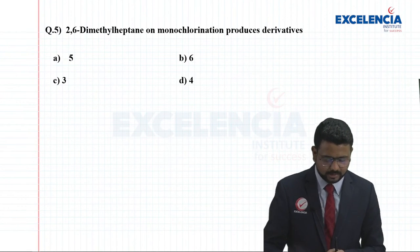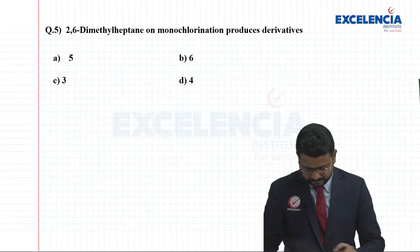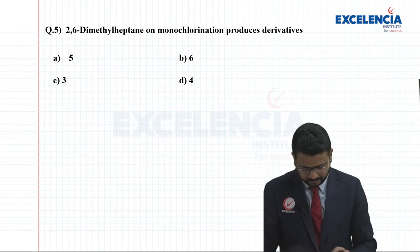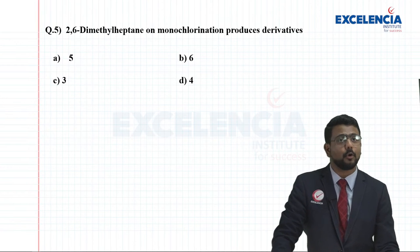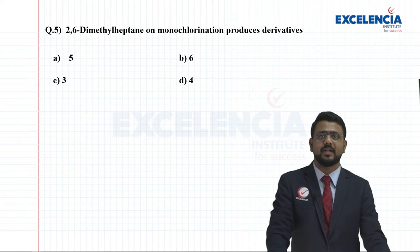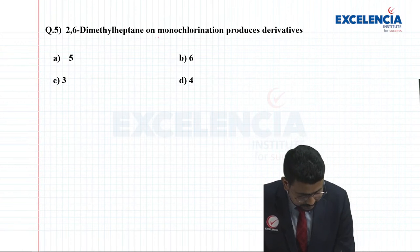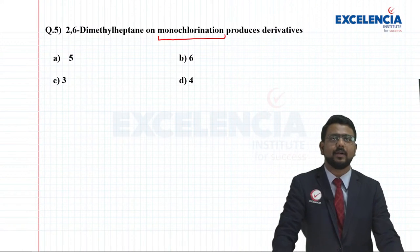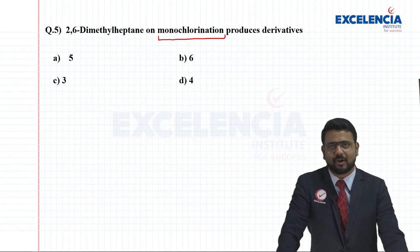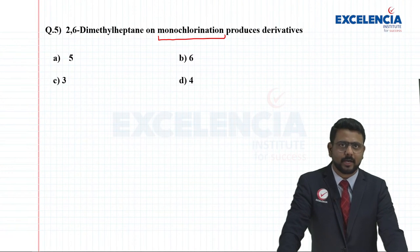Next question: 2,6-dimethylheptane on monochlorination produces how many derivatives? Options are 5, 6, 3, or 4. First let us write the structure: 7 carbon chain with methyl groups at C2 and C6. Filling with hydrogens: CH3-CH(CH3)-CH2-CH2-CH2-CH(CH3)-CH3. They are asking how many monochlorination products are possible — only one chlorine can replace one hydrogen.